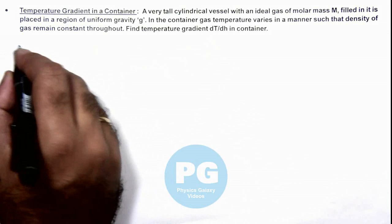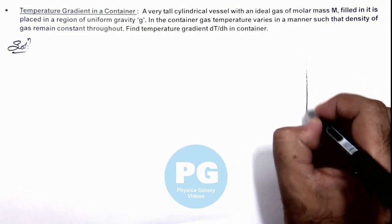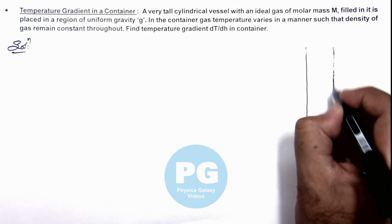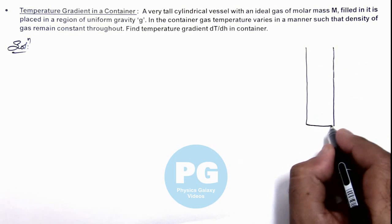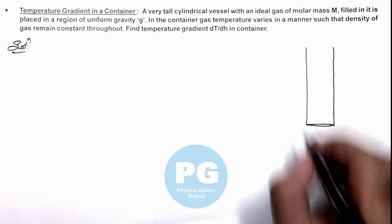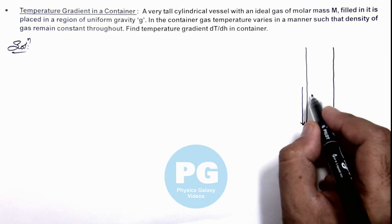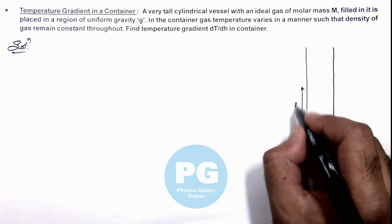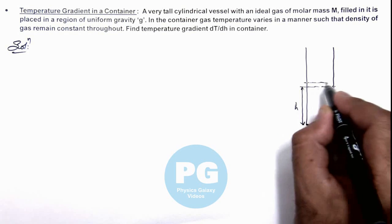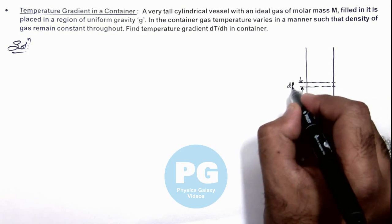Now in this situation, first if we draw the container, it is a very tall cylindrical vessel in which a gas is filled. So to analyze the temperature gradient, we can consider at a height h an elemental layer of gas which is of width dh.